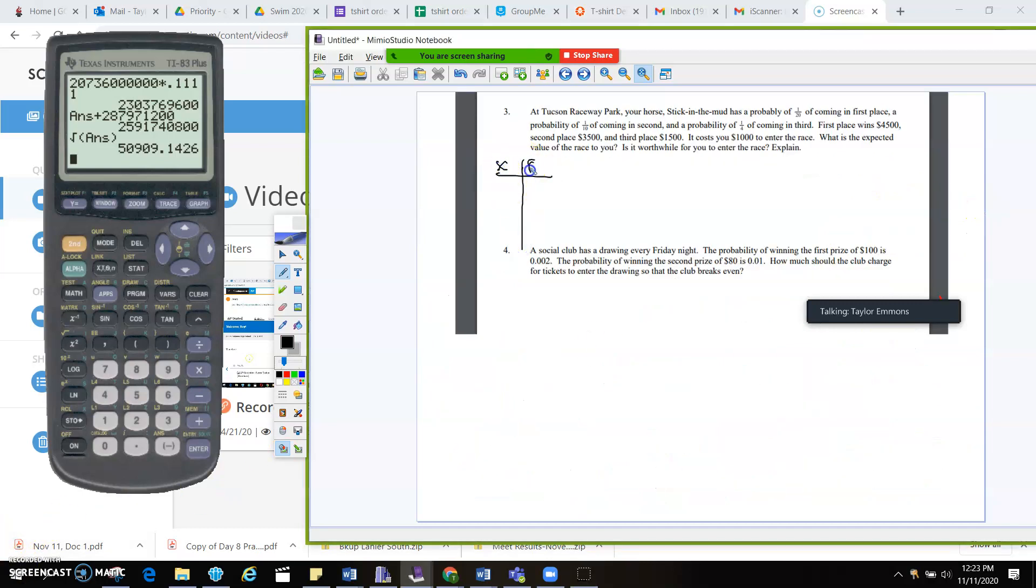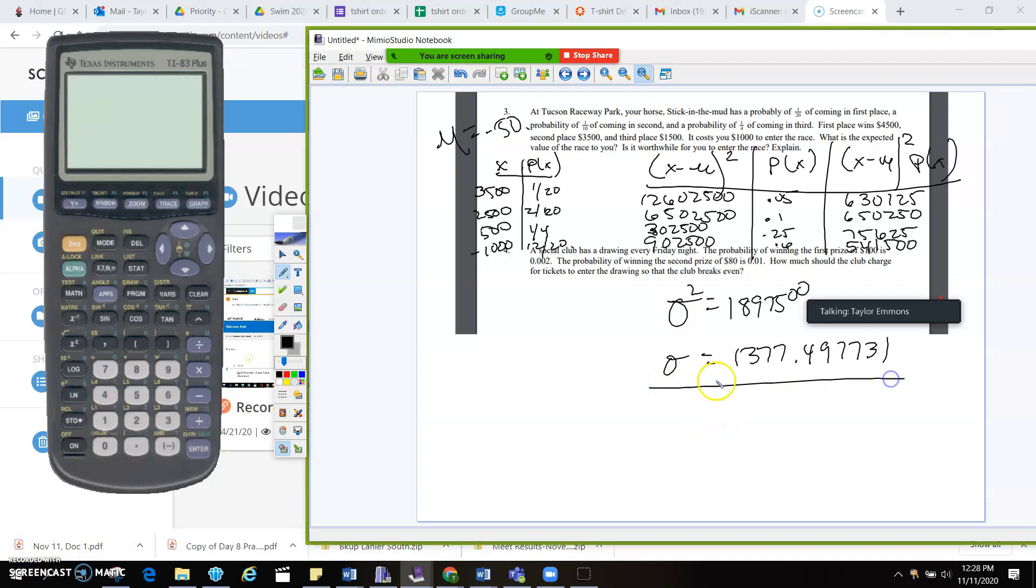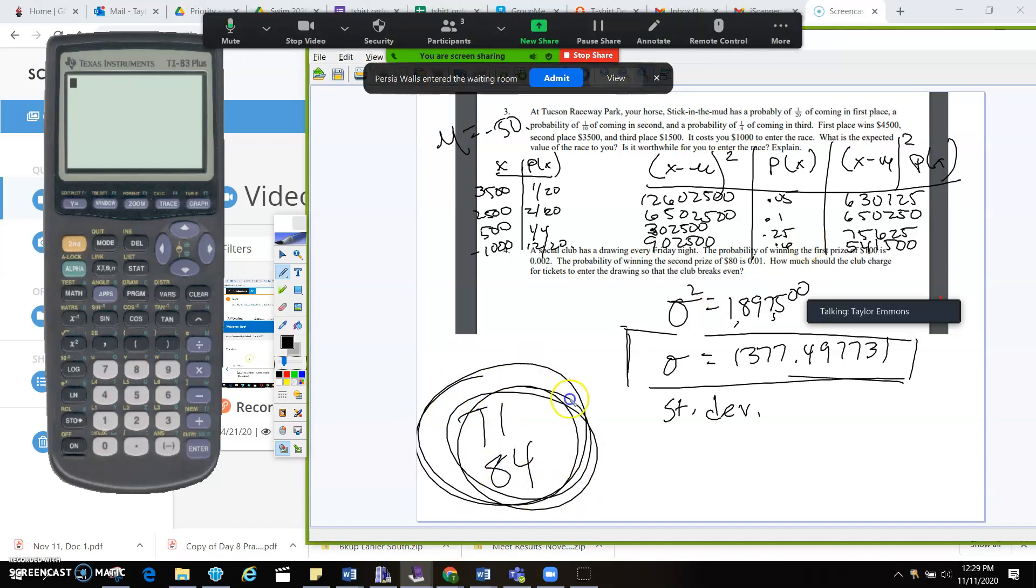So on number three, what's going to happen is we've got probabilities and we've got each of these. We've got 3,500, 2,500, or 500, and minus 1,000. And we have probabilities for each. So we had 1/20, 2/20, 1 fourth. And then what was the probability of negative 1,000? Alright. So checking your answers, your standard deviation should have been 1,377.49. And then your variance is going to be 1,897,500. Again, these are probably not the best ones to do this on, but you can check your work through this, or you can use a TI-84, which I would use. Alright.